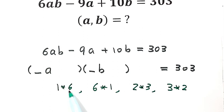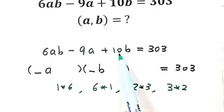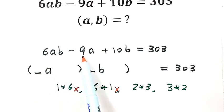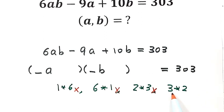Let's check 1 times 6: putting 1 before a and 6 before b — but 6 is not a factor of 10, so this does not work. For 6 times 1: 6 is not a factor of 9, so this does not work either. For 2 times 3: 2 is not a factor of 9, so this also does not work. For 3 times 2: 3 is a factor of 9 and 2 is a factor of 10, so this is the right combination.